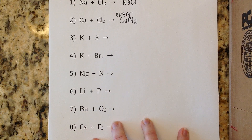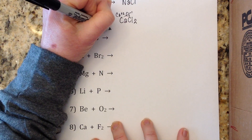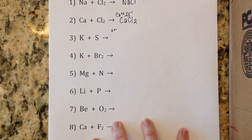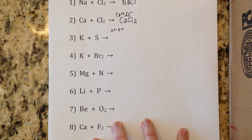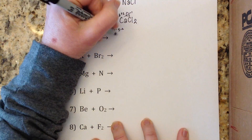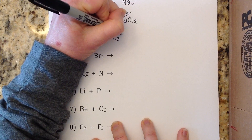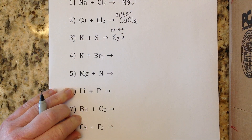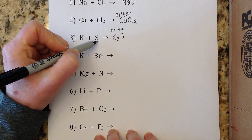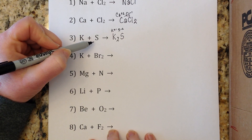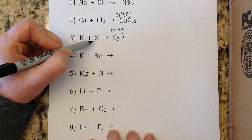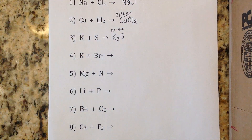Number three: potassium metal and sulfur. Potassium has a plus one, and sulfide is S²⁻ because it's in the negative-two column of the periodic table. When crisscrossed, you get K₂S. You might ask why there's no subscript 2 on the sulfur in the reactants — the answer is that sulfur is not one of the special seven diatomic gases, so it can be written alone and is not diatomic.